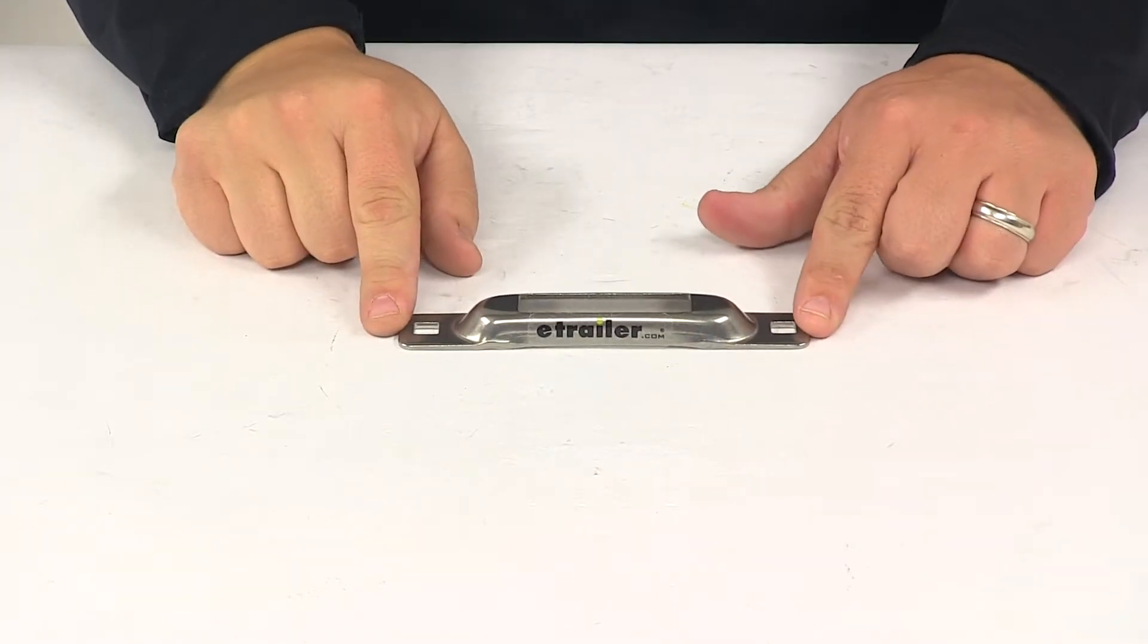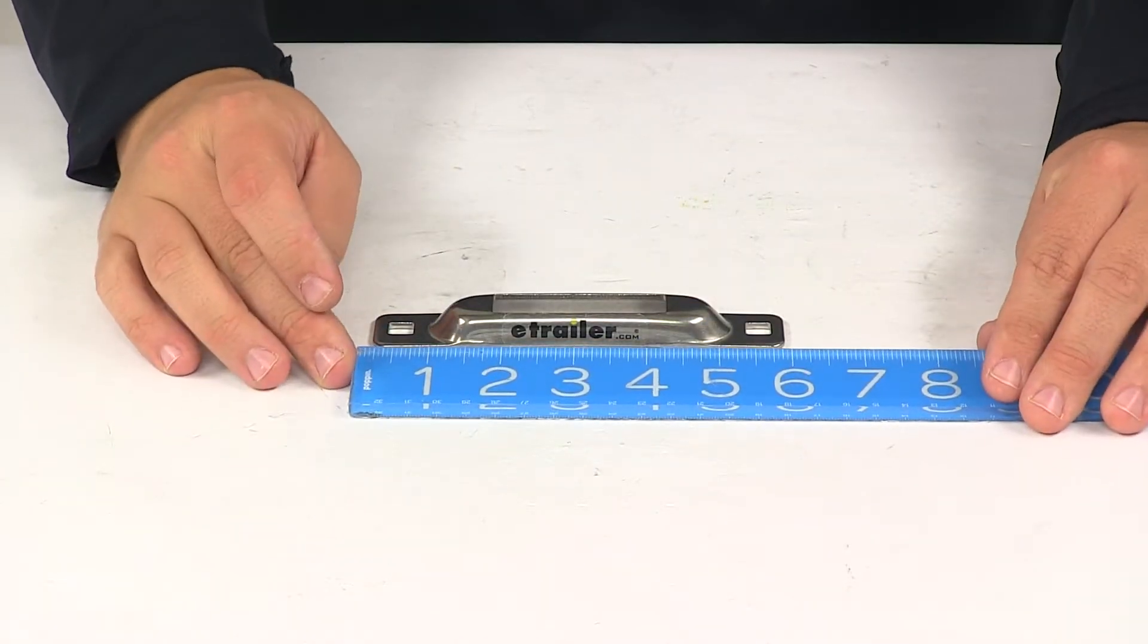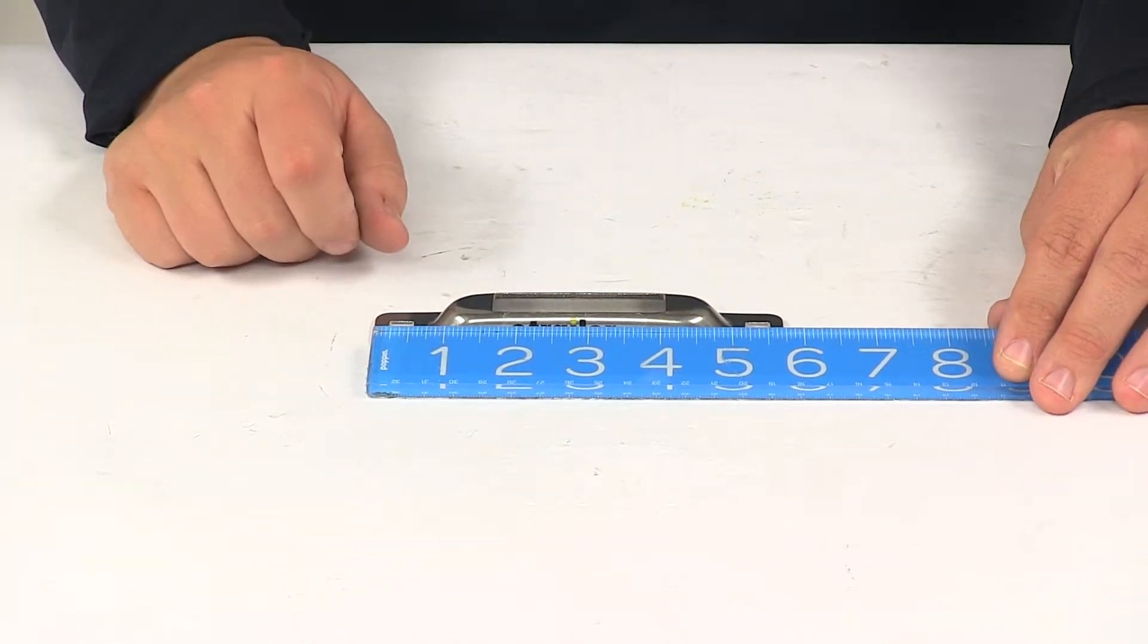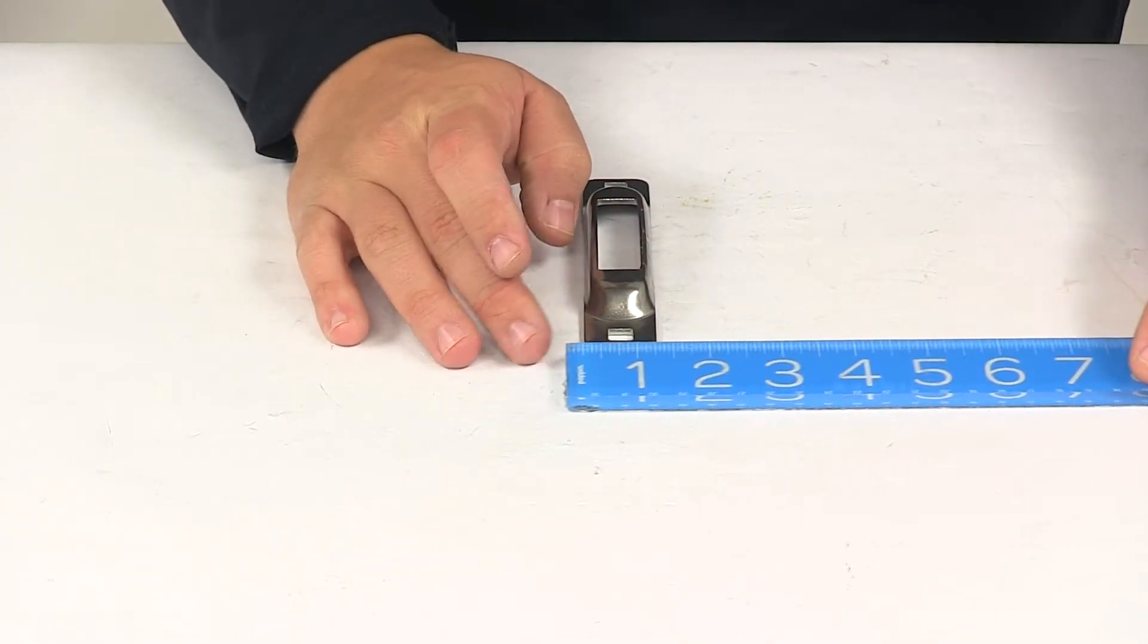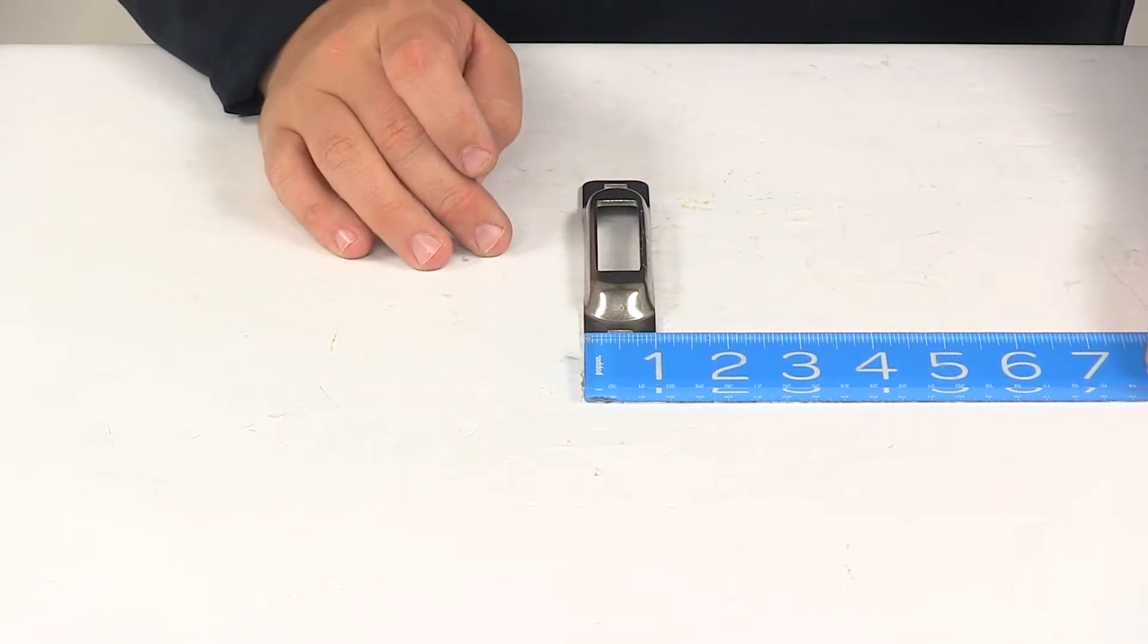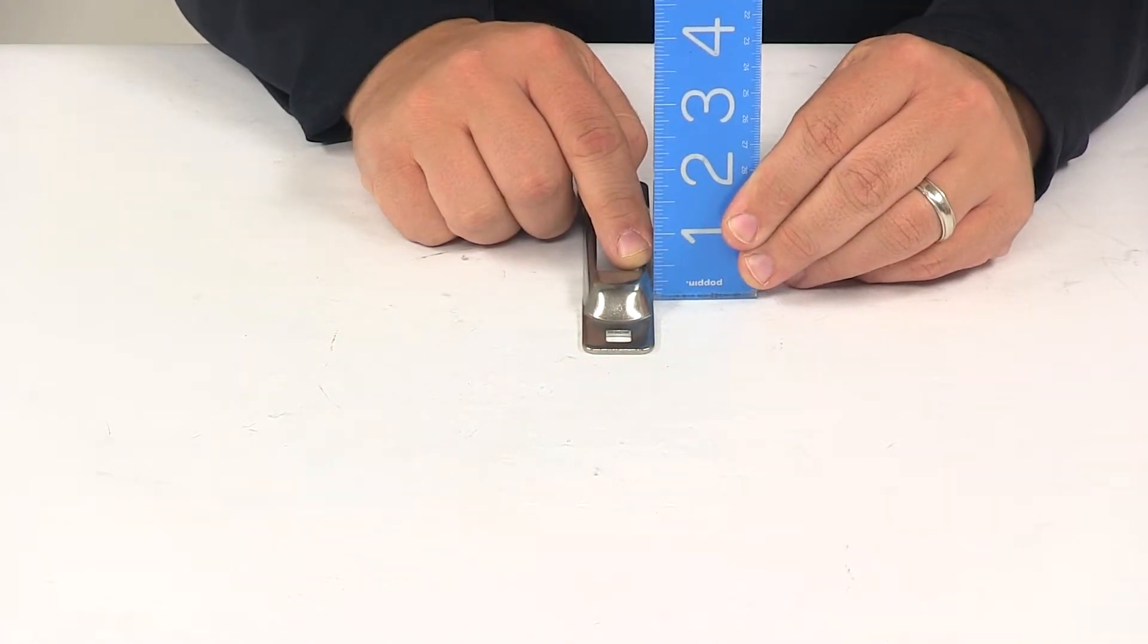When it comes to the dimensions, starting with the overall length of the unit, measuring edge to edge this direction, that's going to give us a measurement of about five and three quarter inches. The overall width measures one inch wide. The overall height is about a half inch tall.